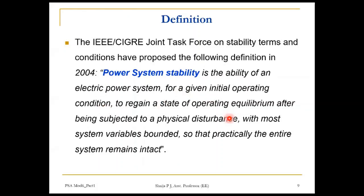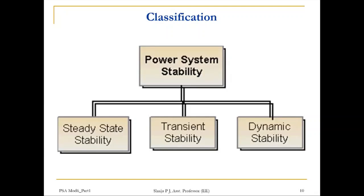With this introduction, we'll move on to the different classifications of system stability. You now understand what stability means, the issues when power system stability is lost, and that it is a dynamic, non-linear system. Power system stability can be classified into three: steady state stability, transient stability, and dynamic stability. We'll study each in detail, starting with steady state stability.